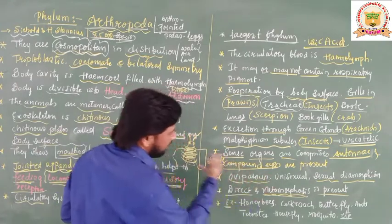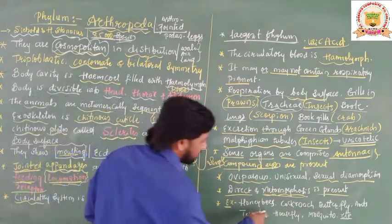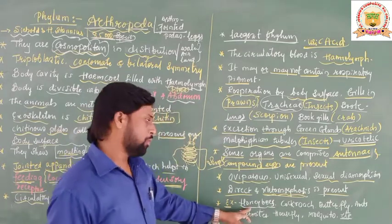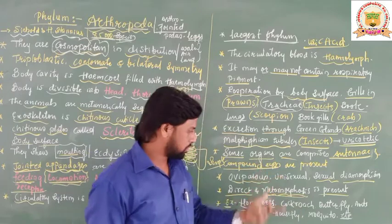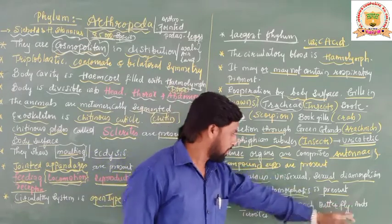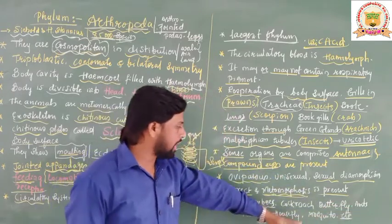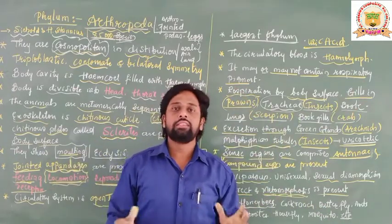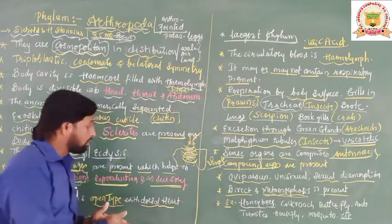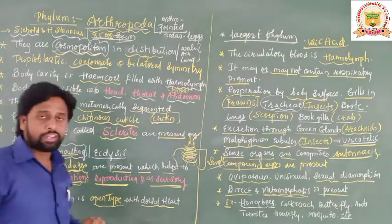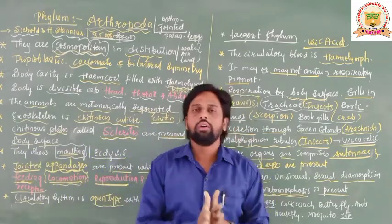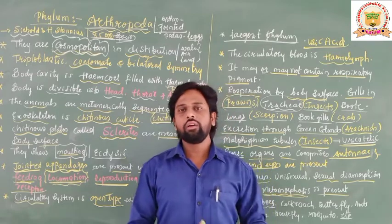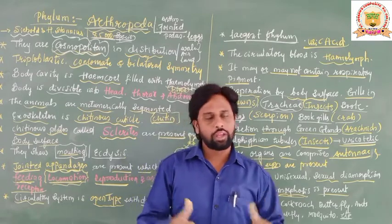These are the important characteristics of phylum Arthropoda. Examples include honey bees, cockroaches, butterflies, ants, termites, house flies, and mosquitoes — a large number of examples can be seen in our surroundings. I hope you got the concept. Please do like my videos and share them among your friends. Thank you one and all.